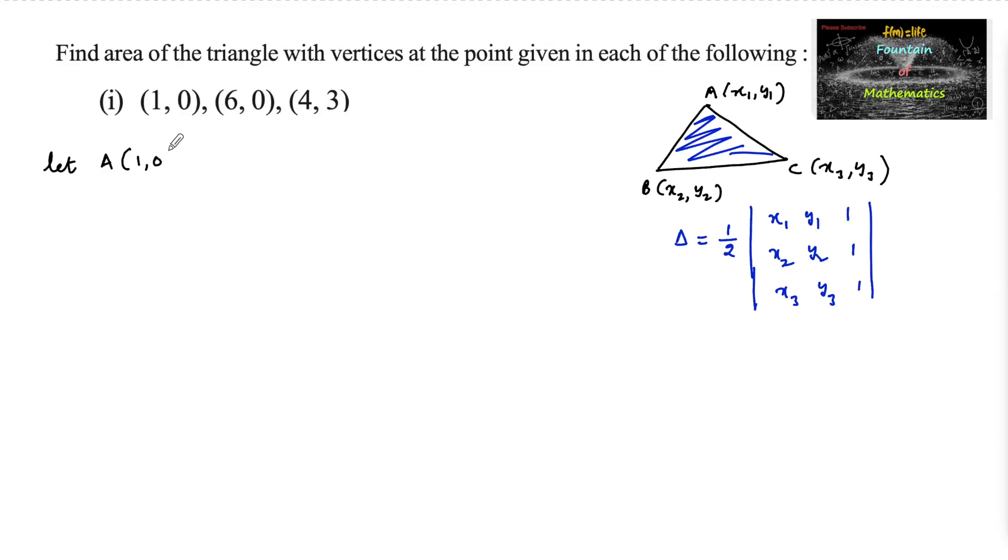A(1,0), B(6,0), and C(4,3) are the vertices of triangle ABC. Then its area